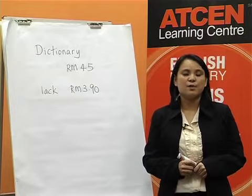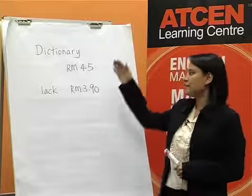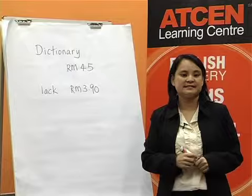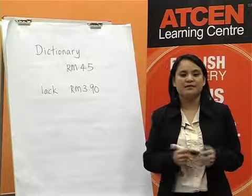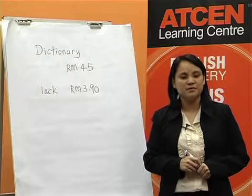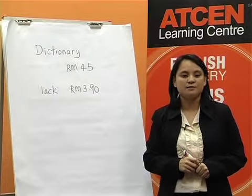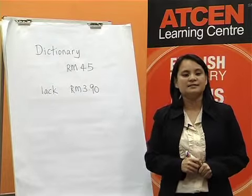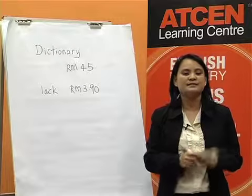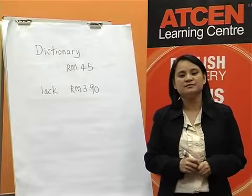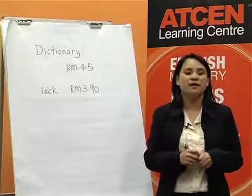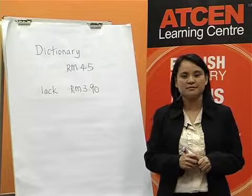To find the answer, we use 45 ringgit minus 3 ringgit 90 cents. There are a lot of methods to solve the problem. However, the easiest number to subtract is 0. We add 10 cents to 3 ringgit 90 cents, and we get 4 ringgit.